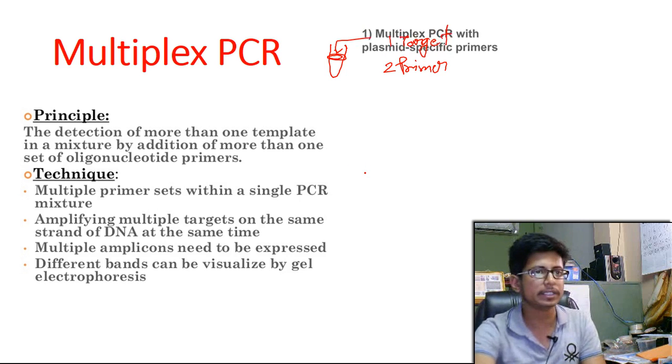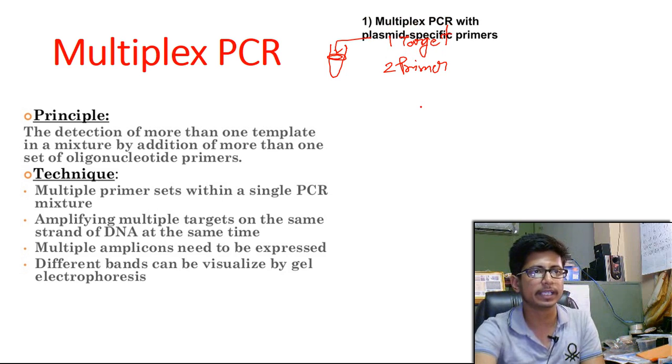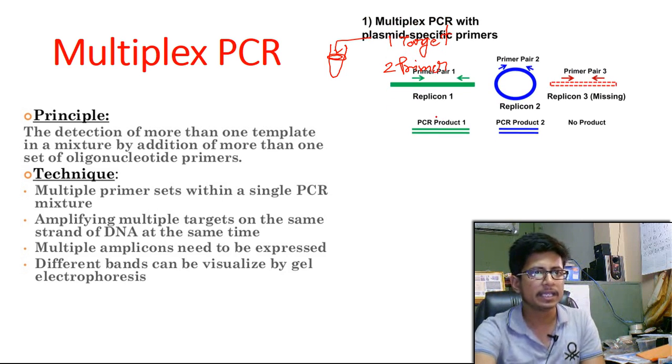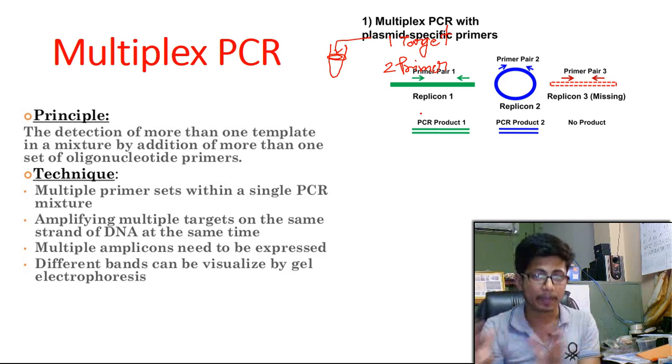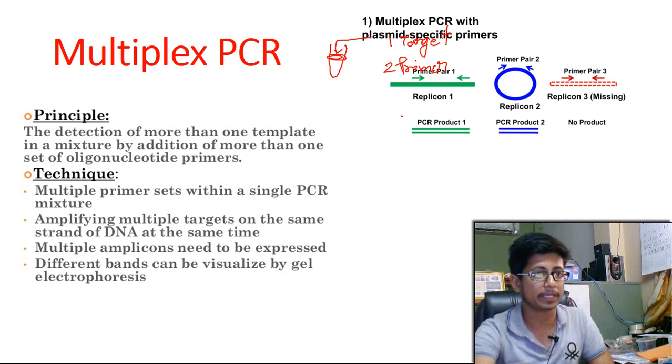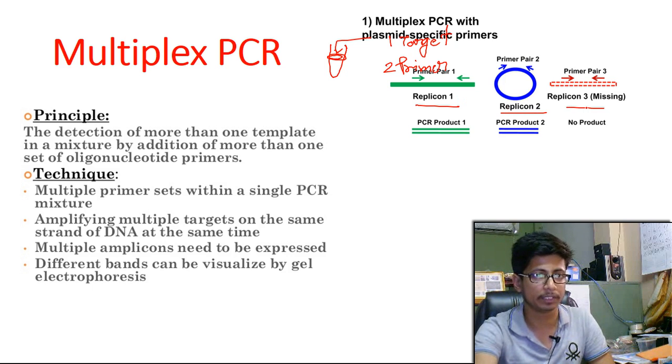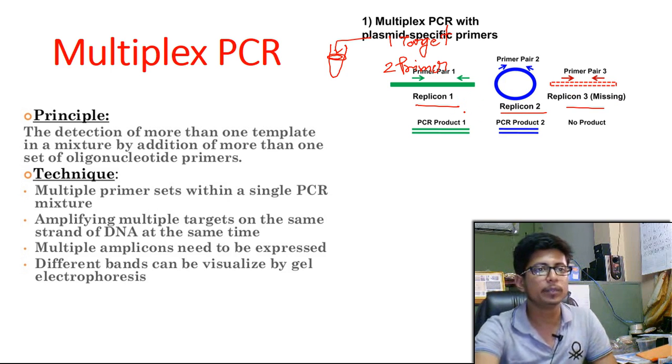What we do in this case is start with different sources of target DNA. In this case, we use three different sources written as replicon - replicon one with green color, replicon two with blue color, and replicon three which is red color. In this mixture, let's say we don't have replicon three present at all, only replicon one and two.